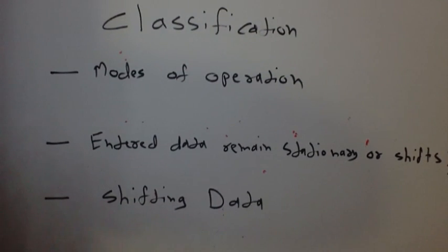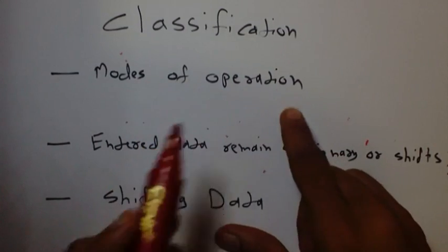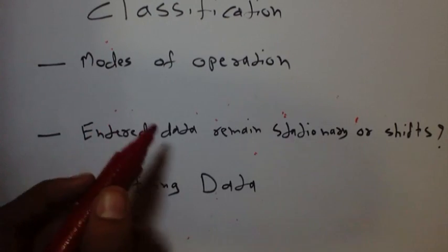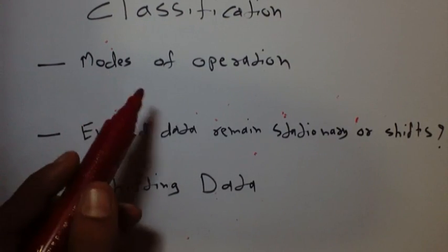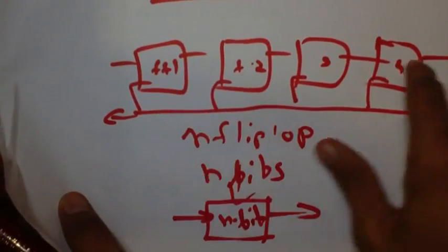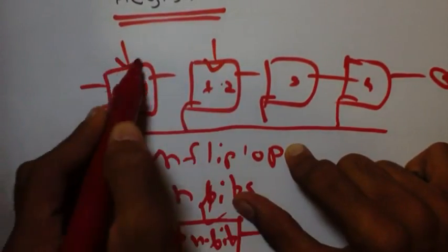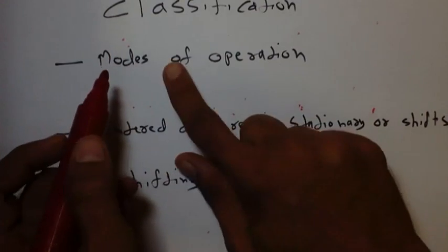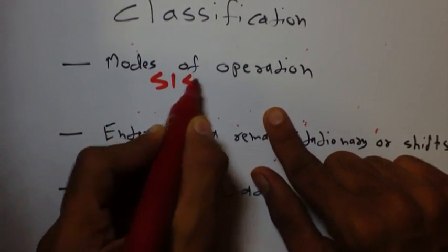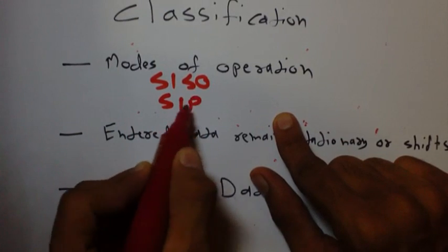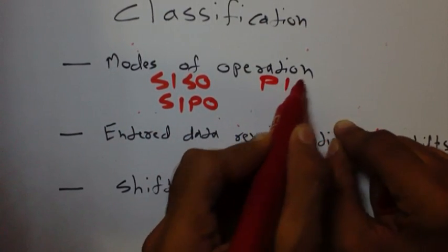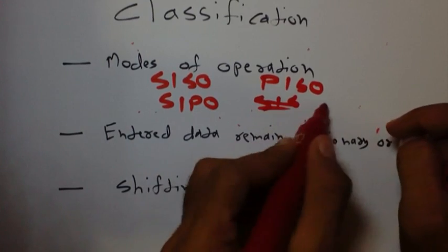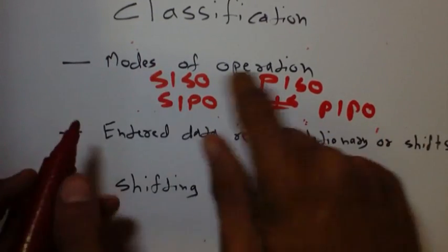Registers can be classified on various bases. One basis is the mode of operation — whether the entered data remains stationary or shifts. Data can be added serially or in parallel. On the basis of mode there are four types: serial in serial out, serial in parallel out, parallel in serial out, and parallel in parallel out. These are the four modes of operation.